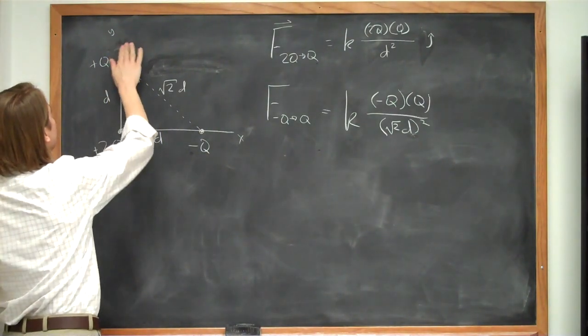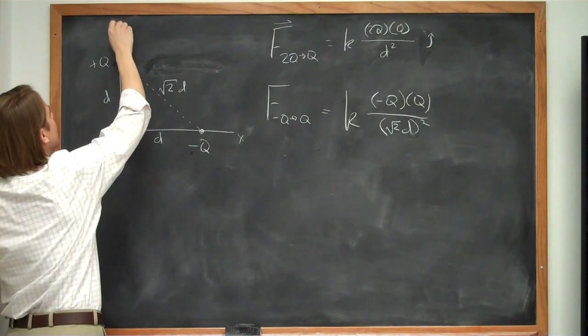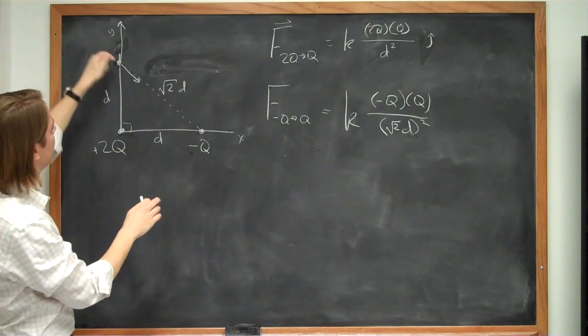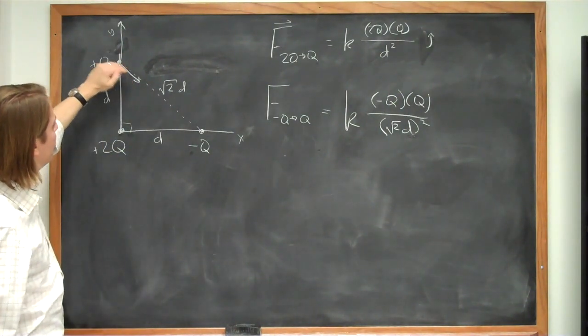I've actually made a mistake here. This one is really bigger. You can look at it and kind of guess this one's bigger because they're closer and the charges are bigger. So that one's big. This one's coming down. But we have to break this now into components.